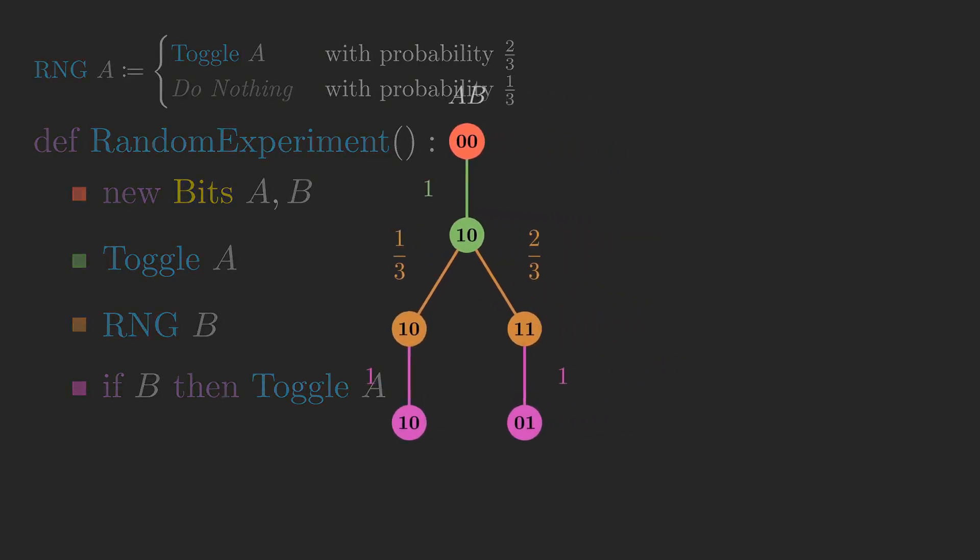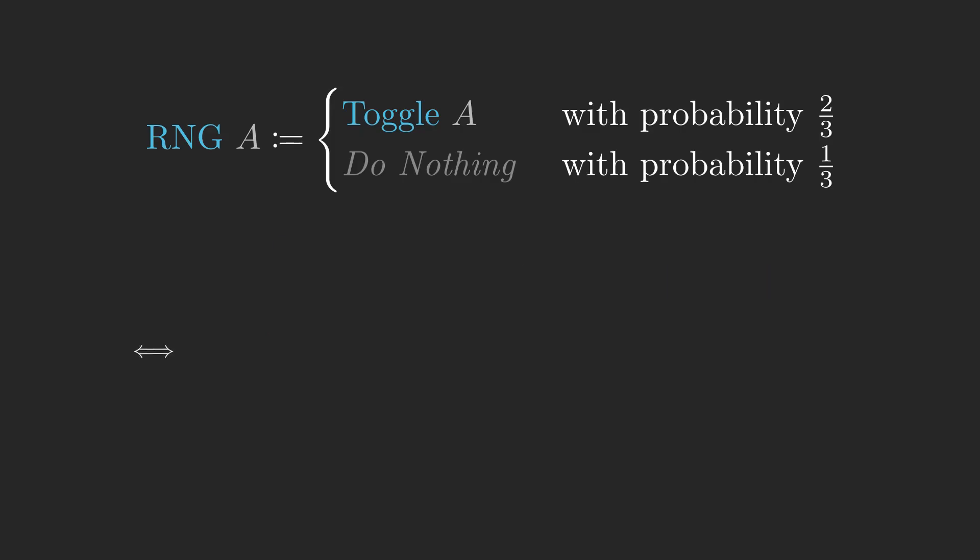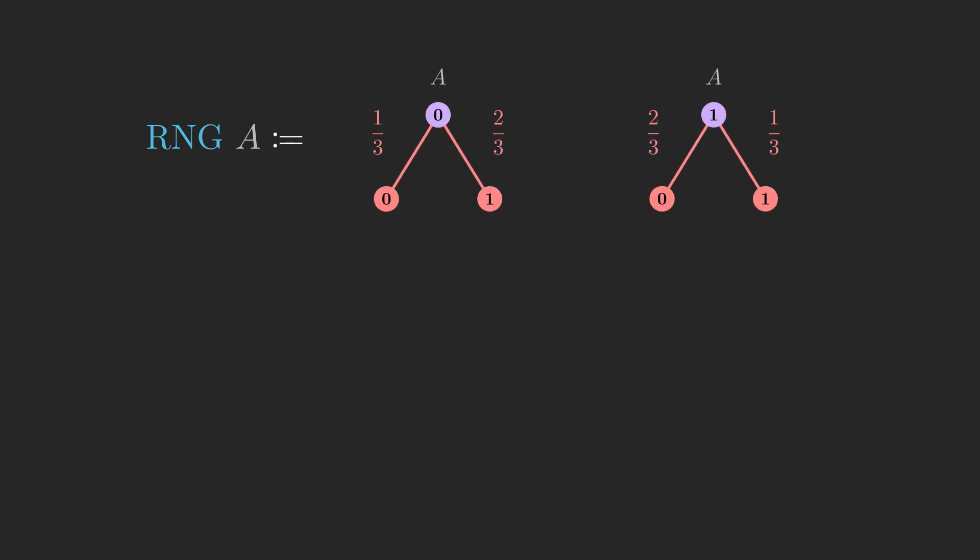The key idea here is that if we want to know the probability of certain outcomes, for example that A is zero and B is one, then we would multiply the probabilities along the branch of the tree that leads to that outcome. In this case, that works out to be two-thirds. We can actually express the definition of RNG directly in terms of probability trees, one for an input of zero and another for an input of one, which is perhaps a more intuitive way to do this kind of analysis.